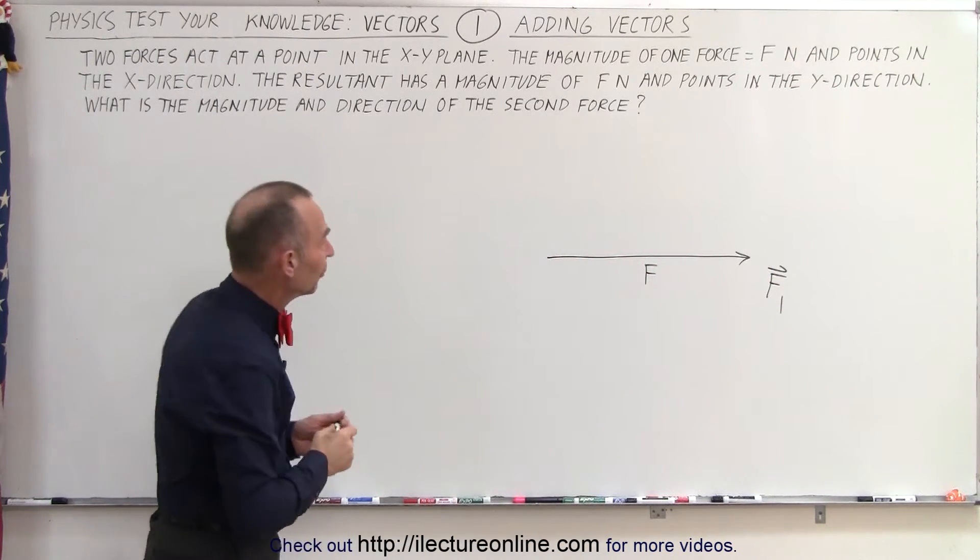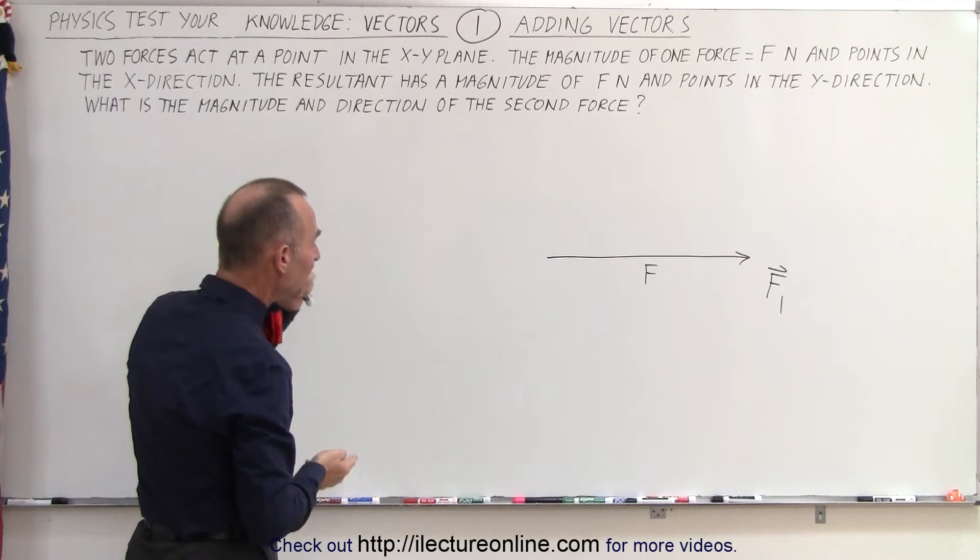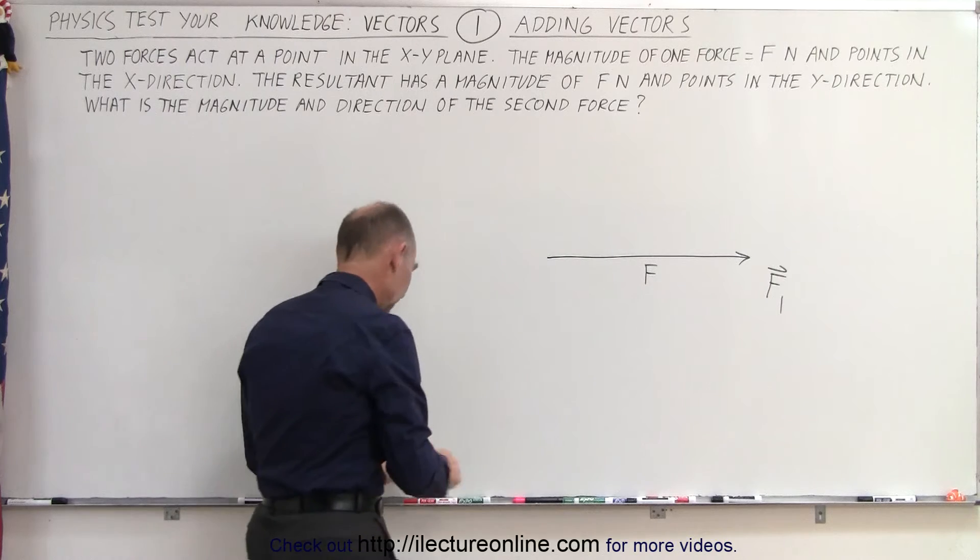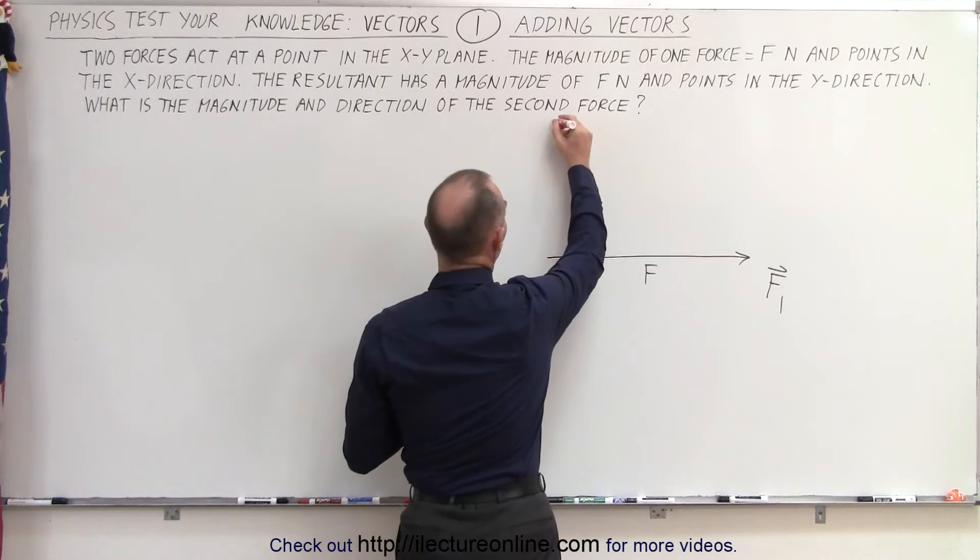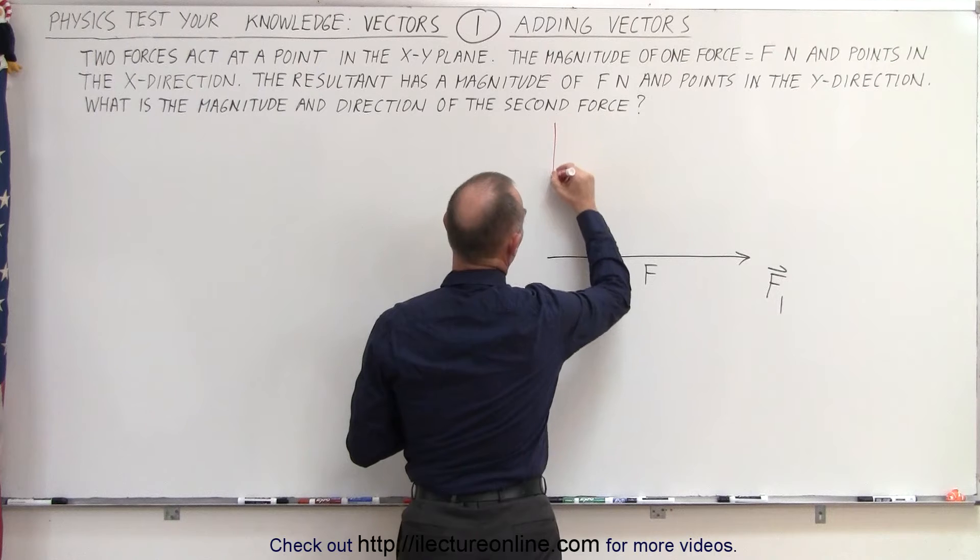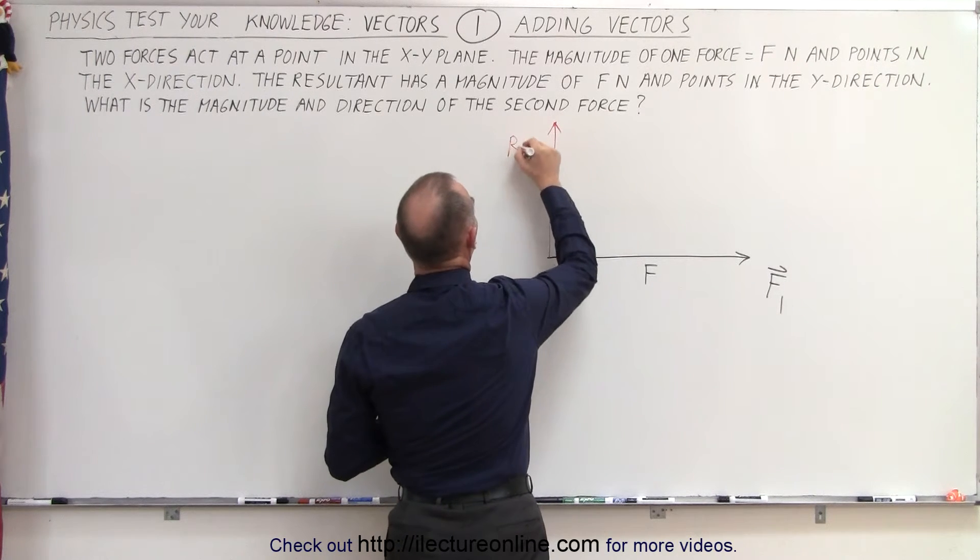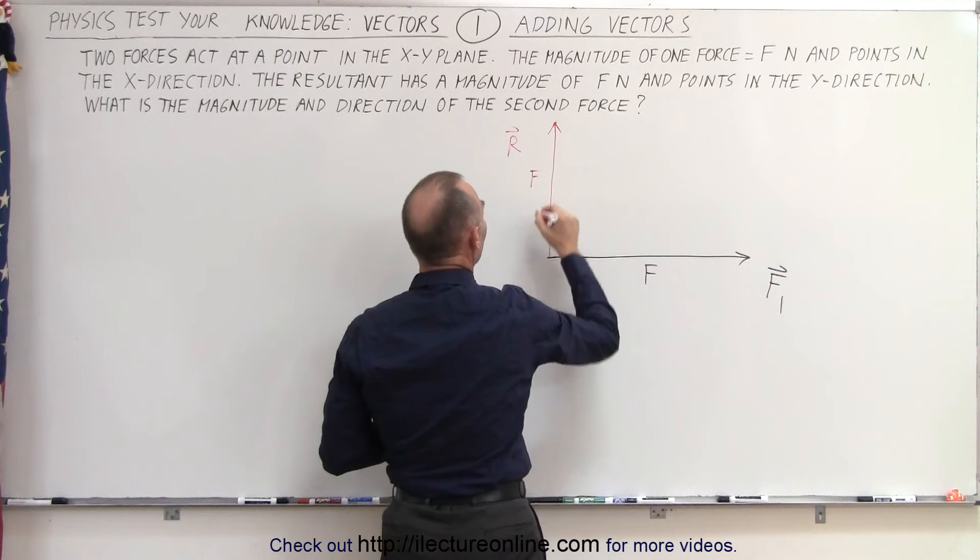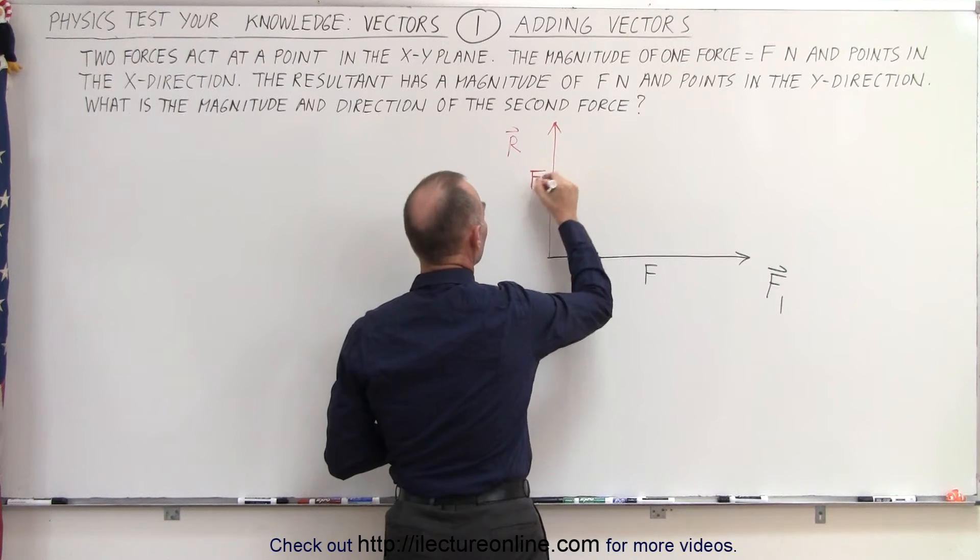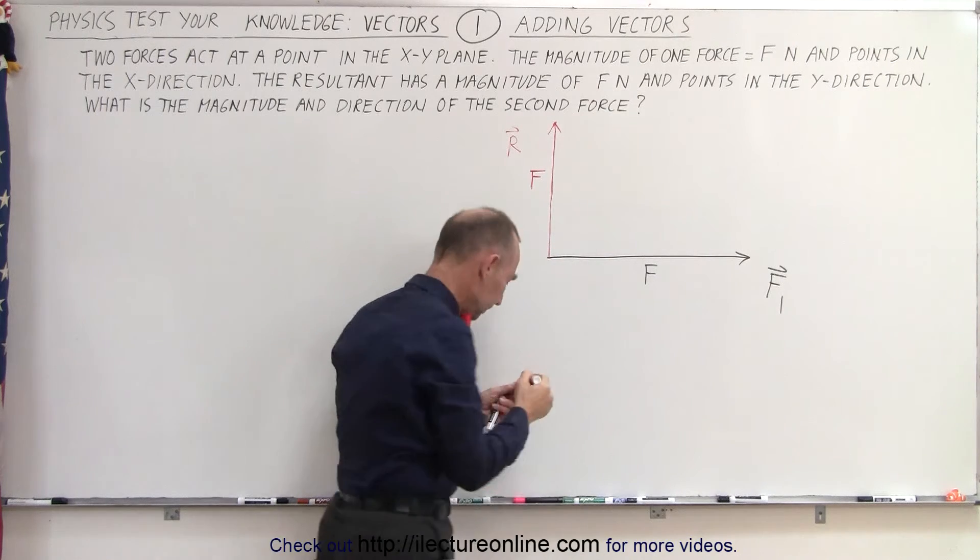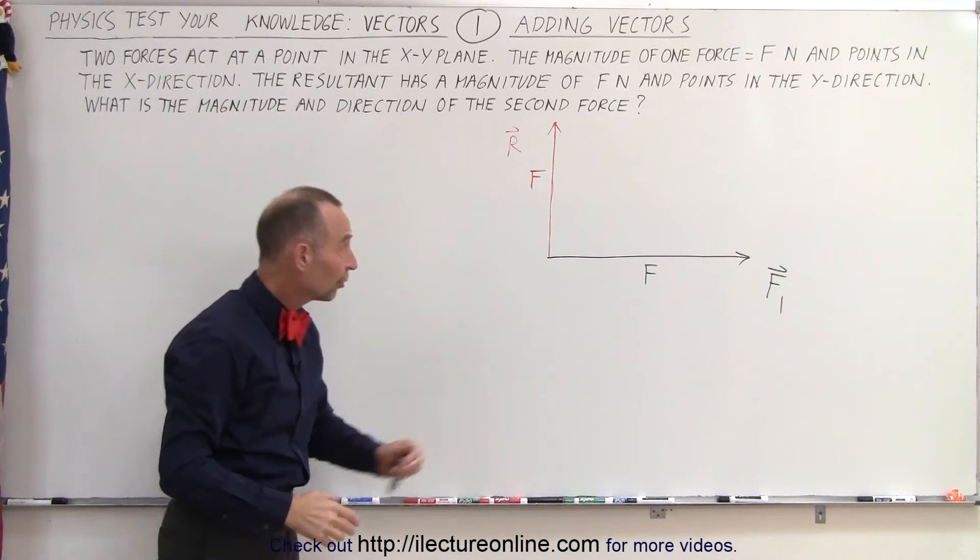Now we have a resultant. They tell us the resultant has the same magnitude but now points in the positive y direction. So let's go ahead and use a different color for the resultant. So here would be the resultant, and let's say that it also has magnitude f. It looks like my red color is kind of dying on me. There we go. So there's the resultant.